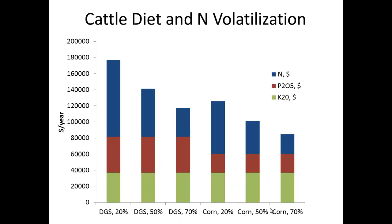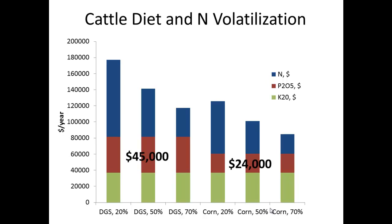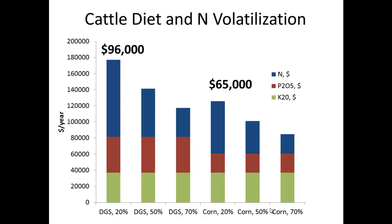Breaking down the value of manure by nutrient component: green represents K2O value, red represents P2O5 value, and blue represents nitrogen value. Across all six scenarios (distillers grains and corn control diets at 20%, 50%, and 70% volatilization), K2O is worth about $37,000. P2O5 is worth about $45,000 for distillers grains and about $24,000 for the corn control. Nitrogen with distillers grains and 20% volatilization is worth $96,000; with corn control it's about $65,000. At 70% volatilization, nitrogen value drops to about $36,000 for distillers grains and about $24,000 for the corn-based diet.